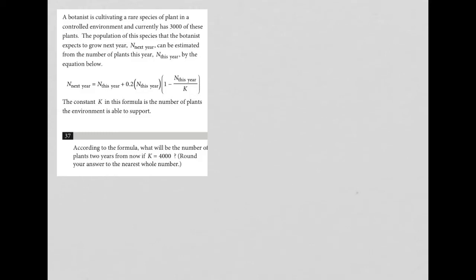So this question is, the information provided for this question is here. It's also the same information that we'll use for question 38. The question says, a botanist is cultivating a rare species of plant in a controlled environment and currently has 3,000 of these plants. So I'm going to say 3,000 plants.